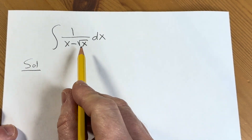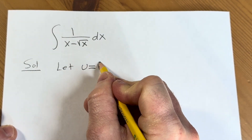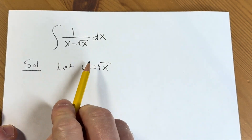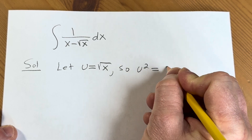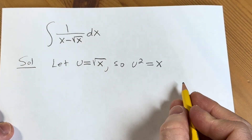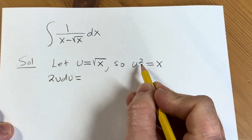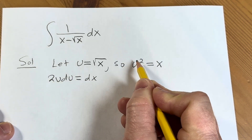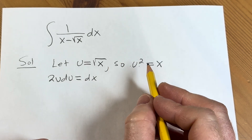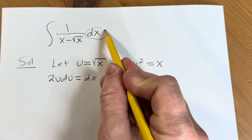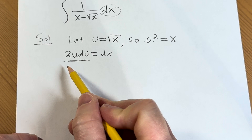We're going to start this problem by doing a substitution. We're going to try to let u be equal to the square root of x. And then you notice that if we square both sides of this, we get u squared equals x. Now we can differentiate both sides. So on the left-hand side we'll get 2u du, and on the right-hand side we just get dx. Here we just used the power rule — we brought the two down and subtracted 1 from the exponent. Now we're pretty much ready to make the substitution: our dx is going to be 2u du, and u squared is equal to x.